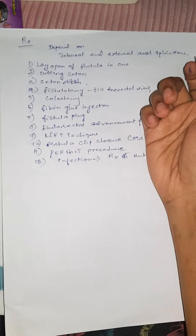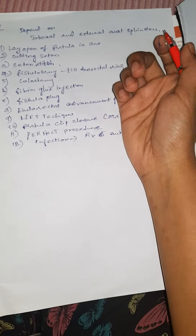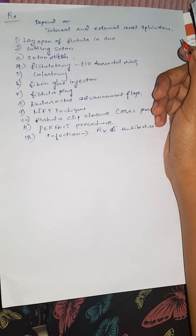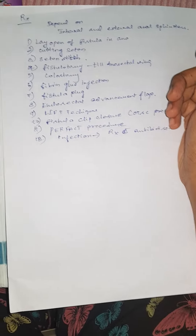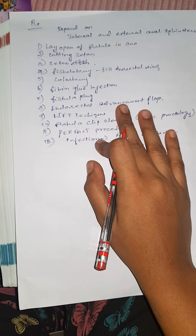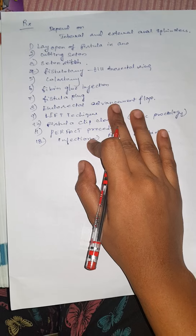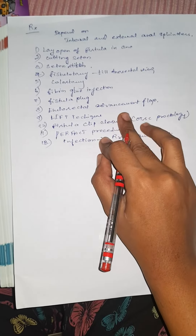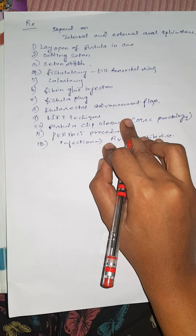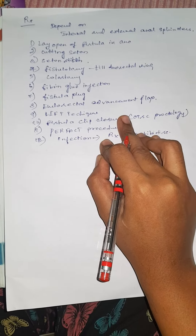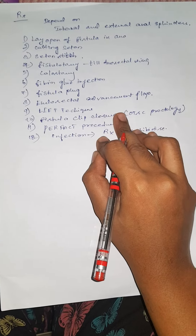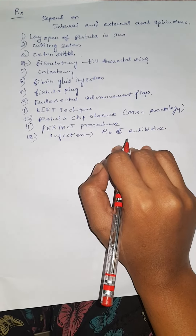There are many treatment options for anal fistula, depending on the involvement of the internal and external anal sphincters. These include lay open of the fistula, cutting seton, seton stitch, fistulotomy with anal lateral sphincterotomy, colostomy, fibrin glue injection, fistula plug, endorectal advancement flap, LIFT technique, and fistula clip closure.